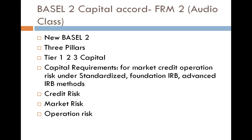When looking at internal estimates for loss given default, credit institutions must estimate average and experience-based loss using historical data related to their defaults. That was a brief introduction to credit risk capital requirements under Basel 2 norms, covering the standardized and foundation IRB approaches. This topic will be continued in the next video.